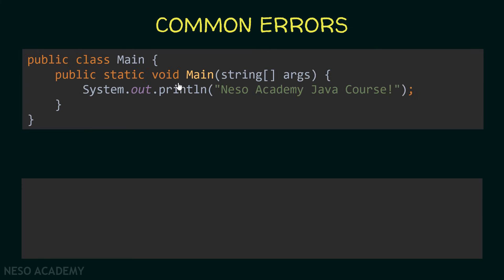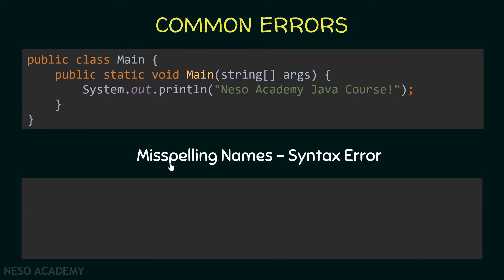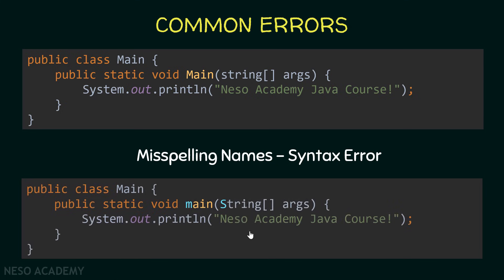One more example — have a look at this code, pause the video, and find the error. This is a little tricky, but basically we are misspelling names, and this is a syntax error. The main method has a capital M, which is wrong; also, String is written with a capital S. The correct code fixes these spellings. Remember that the compiler will help you whenever you have syntax errors, so don't worry.